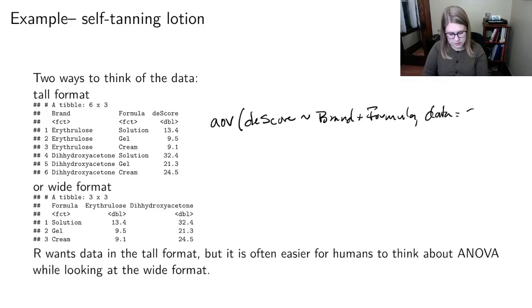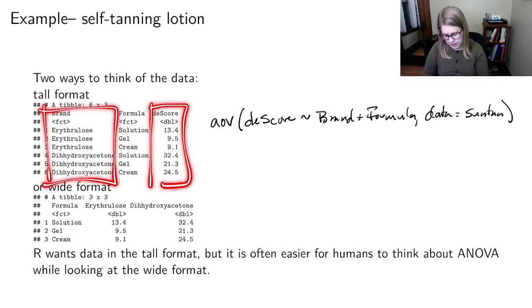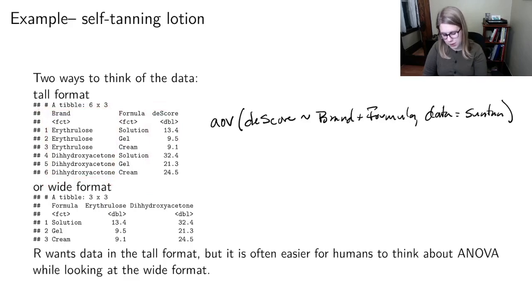My data, I think it's called suntan. So in order to be able to do that kind of analysis in R, I need a column for formula, I need a column for D score, I need a column for brand. But if you are a person and you're trying to think about doing the ANOVA table by hand, it's usually easier to think about it when you look at this wide format. So the book will present both of these formats a lot of times.